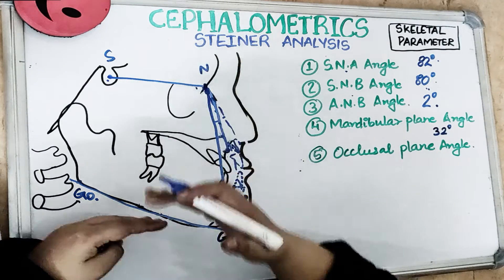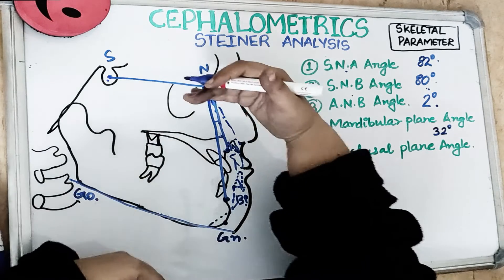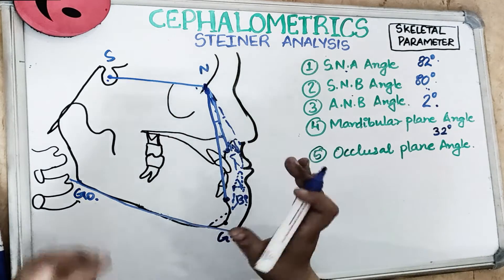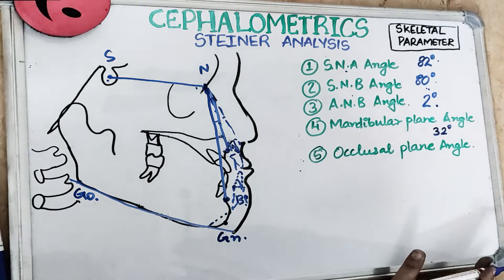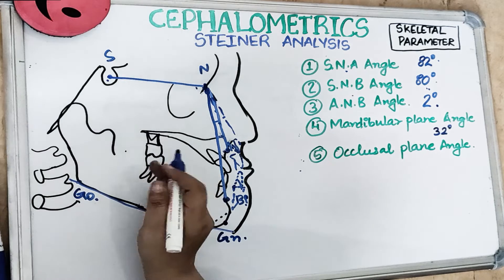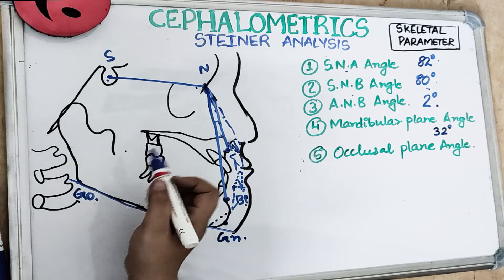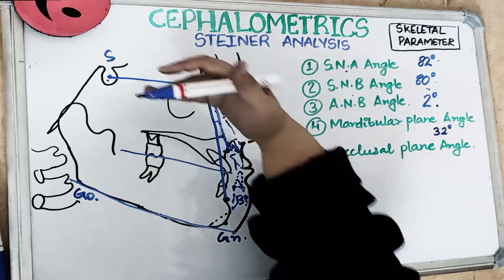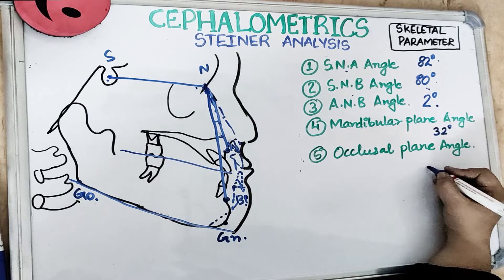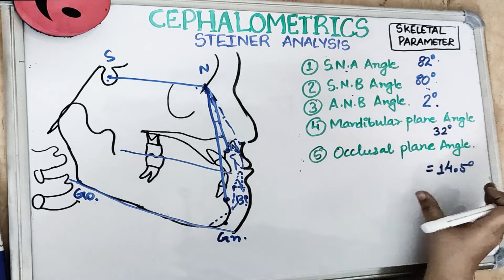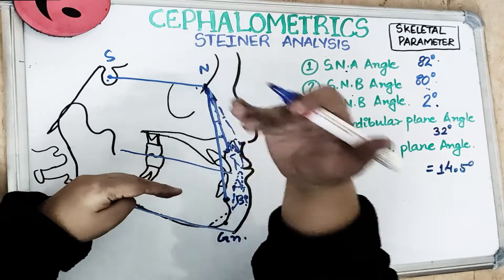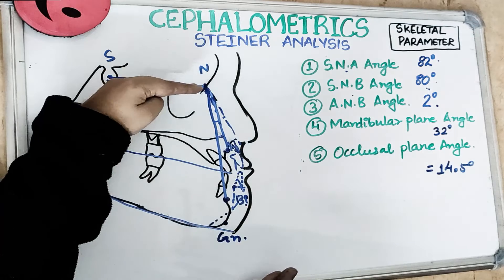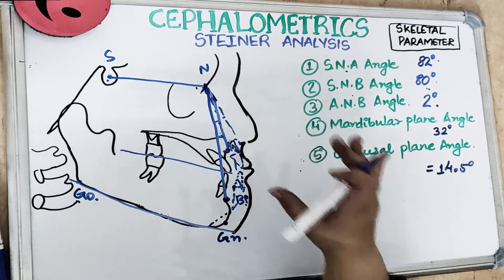The mandibular plane angle is increased for vertical growers, since the growth pattern is vertical, making this angle greater. It is decreased for horizontal growers. The fifth skeletal parameter is the occlusal plane angle — the angle between the occlusal plane (connecting occlusal surfaces of molars and premolars) and the SN plane. On average this is 14.5 degrees. It is increased in vertical growers and decreased in horizontal growers, indicating the growth pattern.